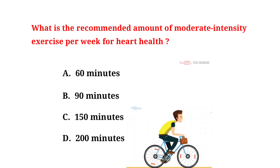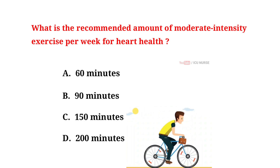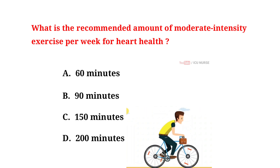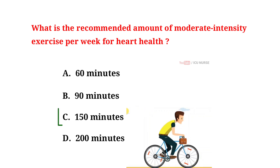What is the recommended amount of moderate intensity exercise per week for heart health? A. 60 minutes. B. 90 minutes. C. 150 minutes. D. 200 minutes. And the correct answer is C. 150 minutes.